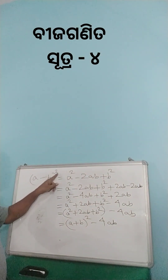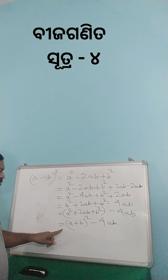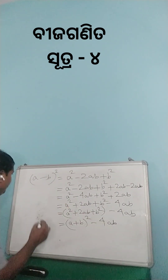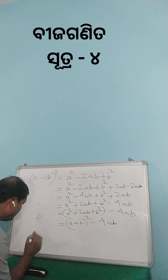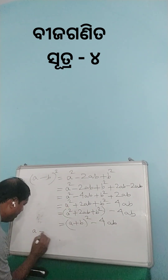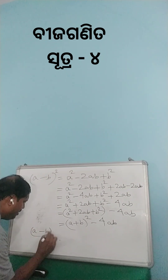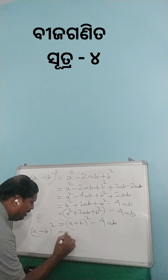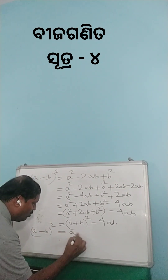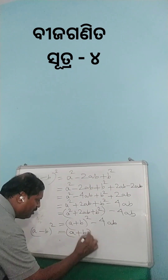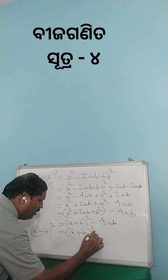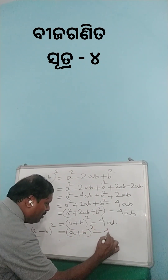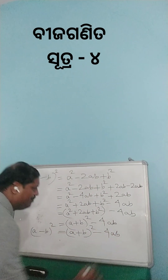A minus B whole square is equal to A plus B whole square minus 4AB. Therefore, A minus B whole square is equal to A plus B whole square minus 4AB.